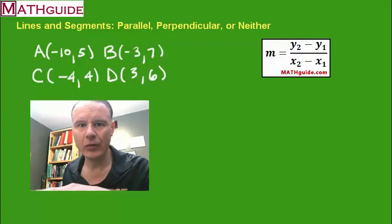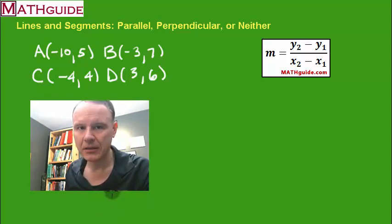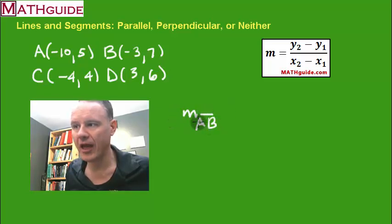Let's say we are dealing with points A(-10,5), B(-3,7), C(-4,4), D(3,6), as shown, and we're trying to determine if line AB and line CD are parallel, perpendicular, or neither. What do you do? You're going to use this formula that you see here, and we're going to calculate the slope. Let's first find the slope from A to B. I'm going to abbreviate it with m and put a little AB next to it.